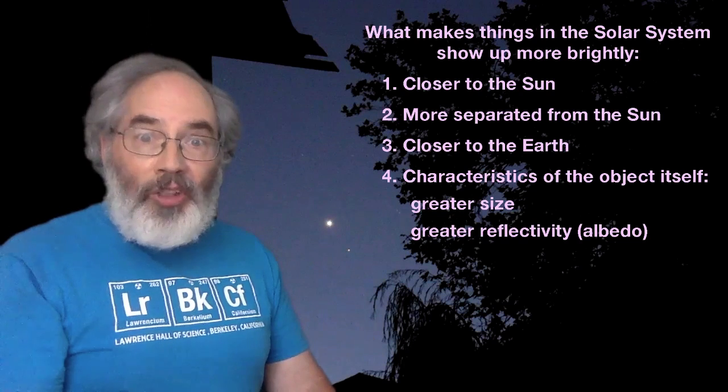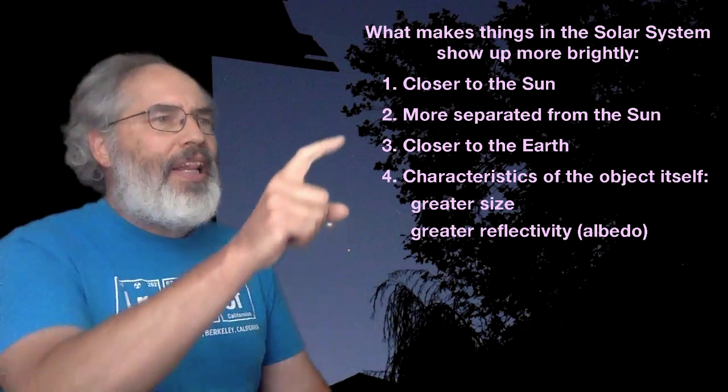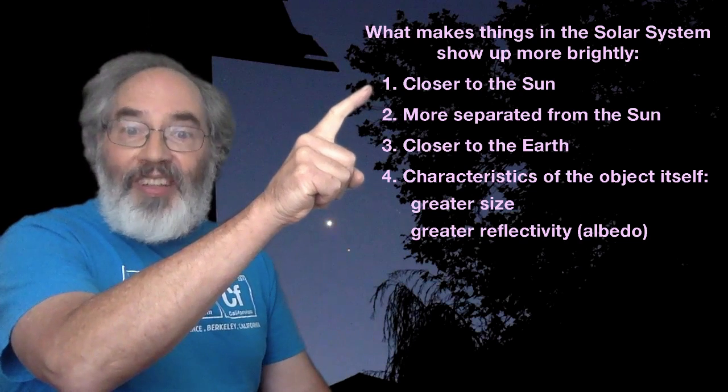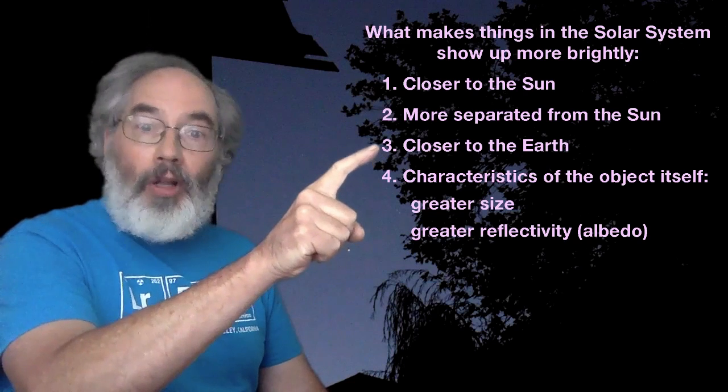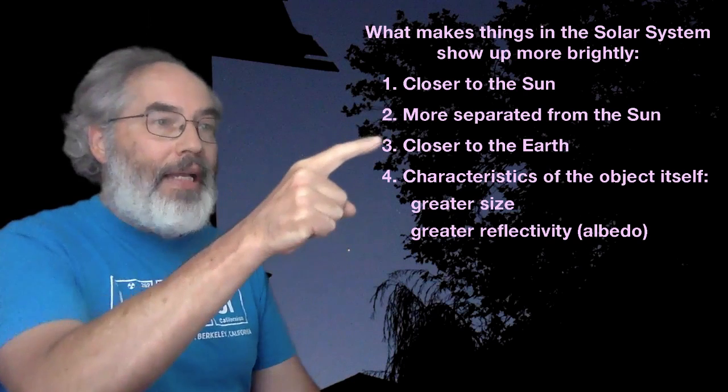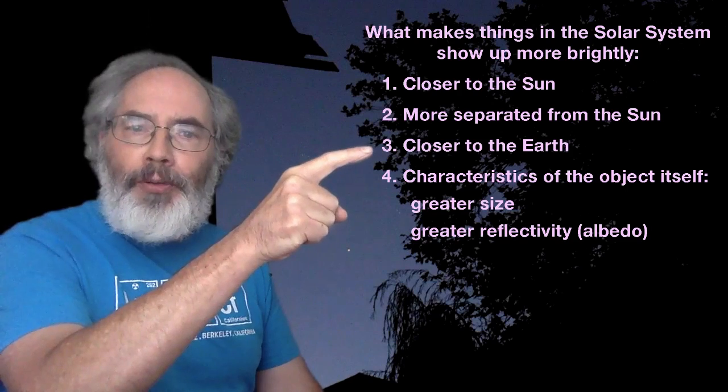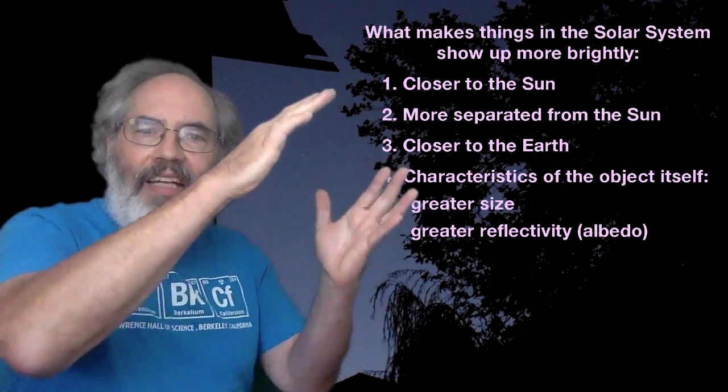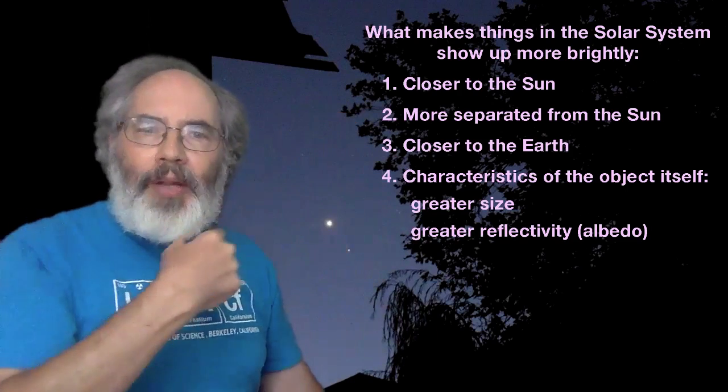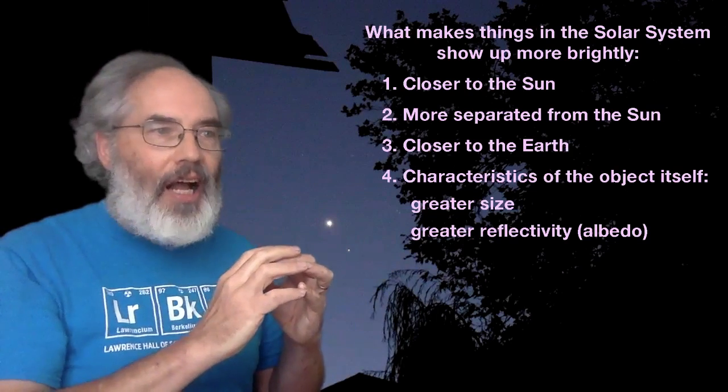So when you see a solar system object in the sky, you can think, how close is it to the Sun? Is it well illuminated? How close is it to me on the planet Earth? And from the point of view from the Earth, how separated does it look from the Sun so that I can see it against the background of a dark sky?